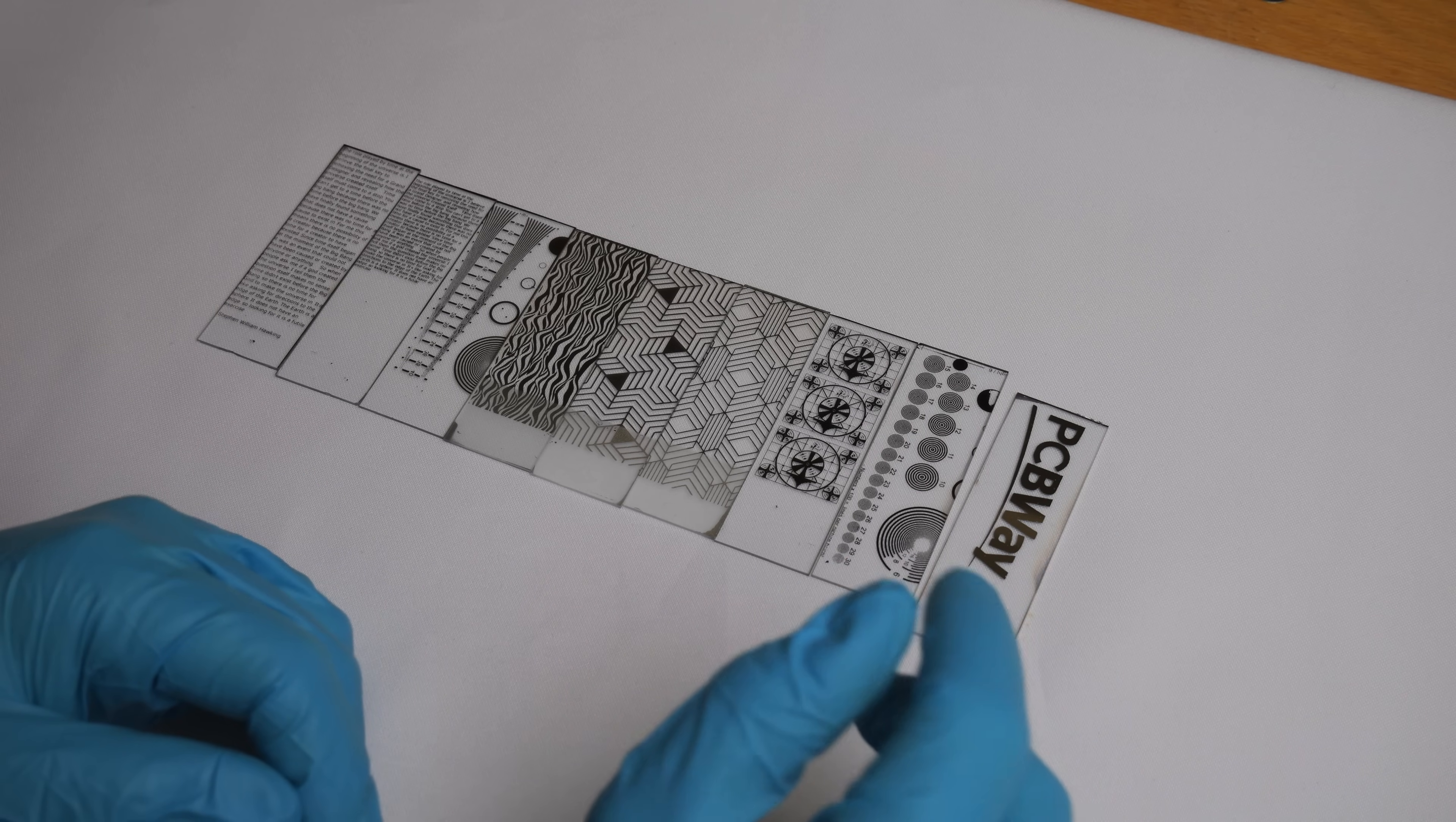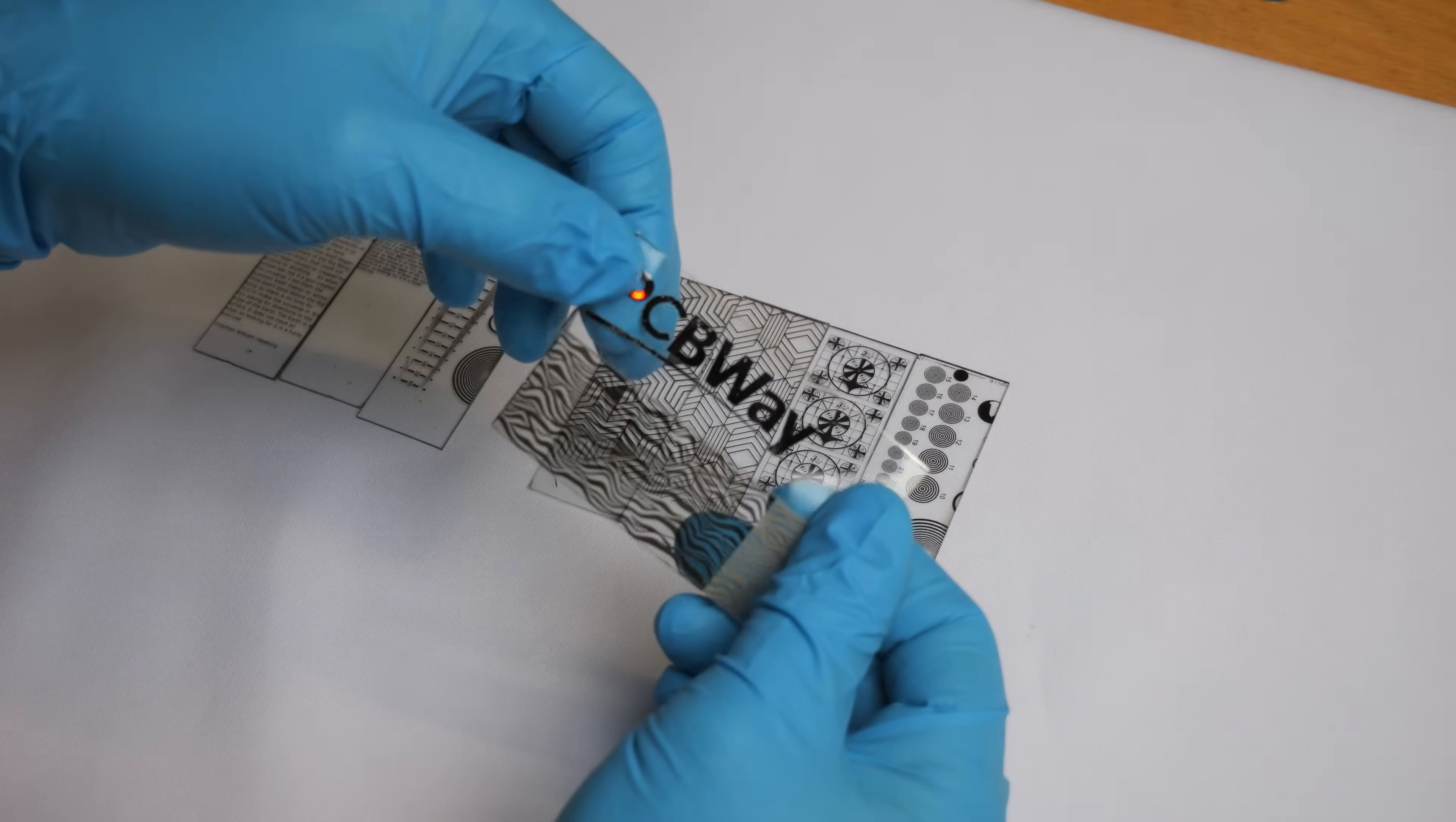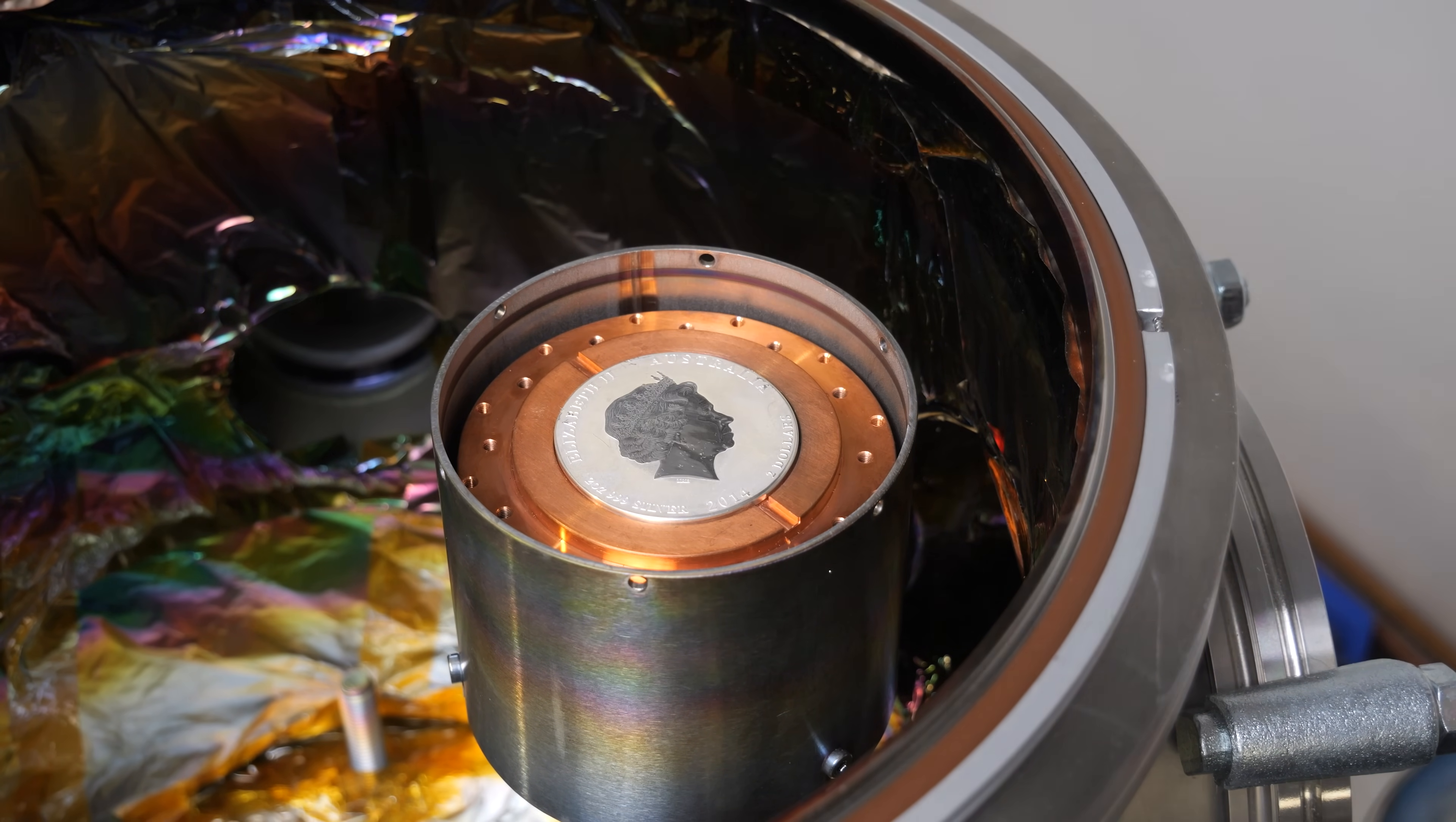All in all I am very happy with the results. You can also use the titanium layer as an adhesion layer for other metals. The PCBWay logo for example is silver on a titanium adhesion layer but even though I'm using titanium as an adhesion layer the silver can scratch pretty easily when touching it. I looked around for a silver target but couldn't find any that were in my budget so I just used a silver coin. I had to reduce the diameter a little bit but now it fits perfectly and it's a good alternative if you don't want to buy an overpriced silver target.